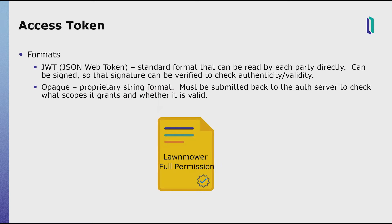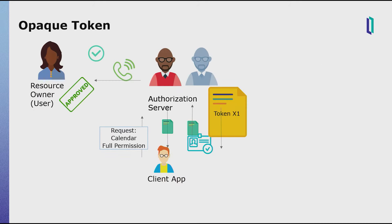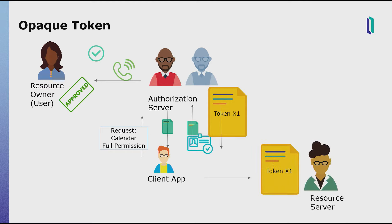Let's talk about access tokens. These come in a few different formats. One is JWTs, JSON Web Tokens — a standard format that can just always be read. They can be signed; it's not in the spec, but you should always sign them so that no one can pretend to make a token from you. The other is an opaque token — a proprietary string format that can't be read directly. You have to send them back to the auth server to read them. When the client app sends an opaque token to the resource server, the resource server has to send that token back to the auth server to have its validity checked and its scopes and contents returned. After that, the resource server can grant access to the desired resource at the desired scope.